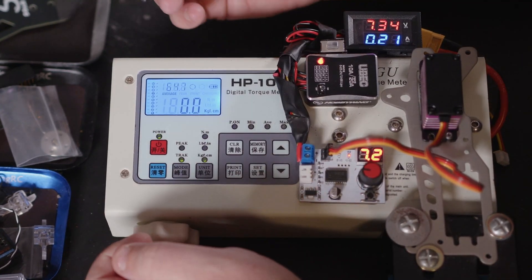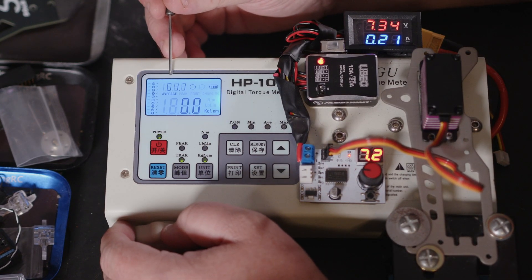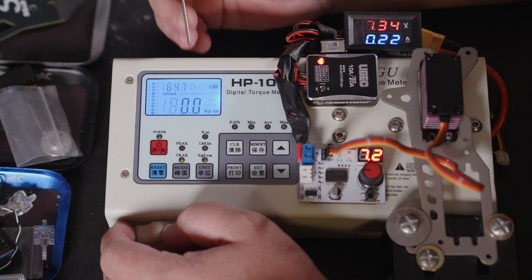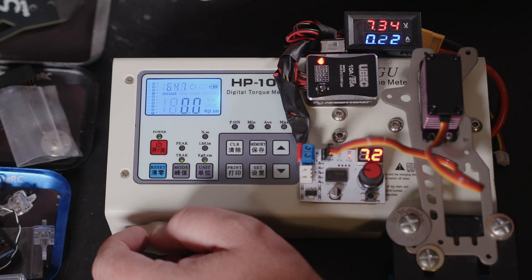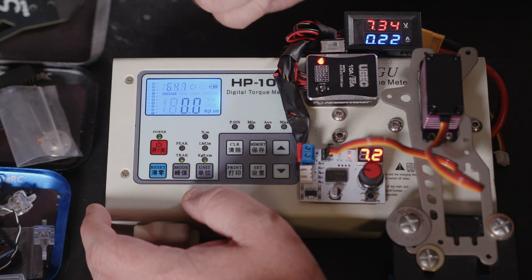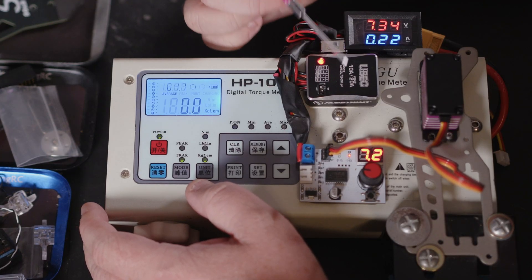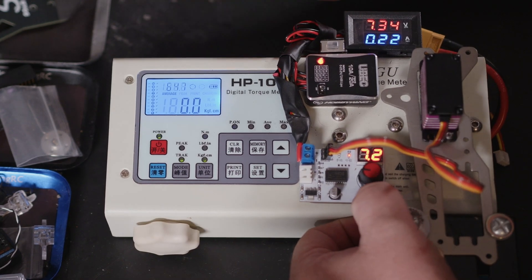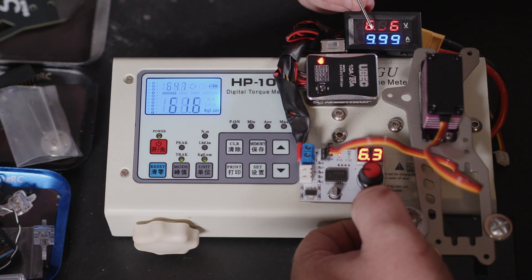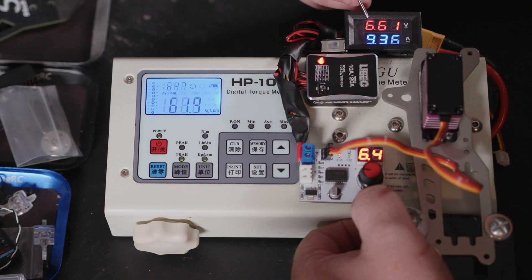We've got an average of 64.7 kilograms of torque and we're at 7.2 volts at rest. If we put it under load, we're dragging almost 10 amps and we drop down to 6.6 volts.